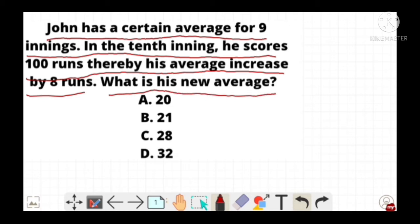To make it easy, let us consider X to be his average for nine innings. It means John has scored altogether 9X runs in nine innings.